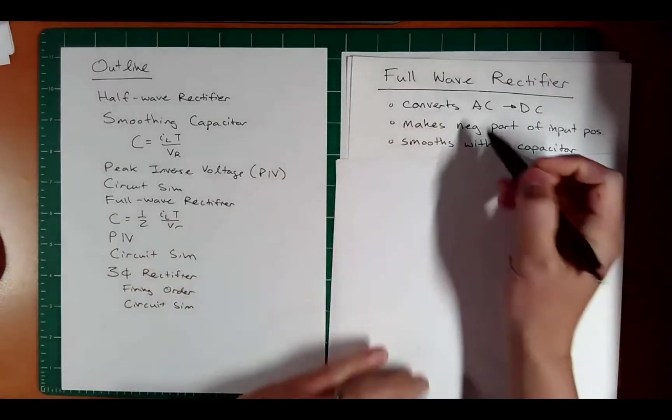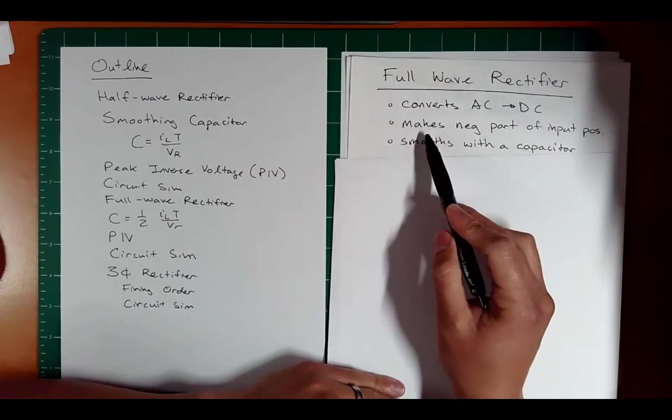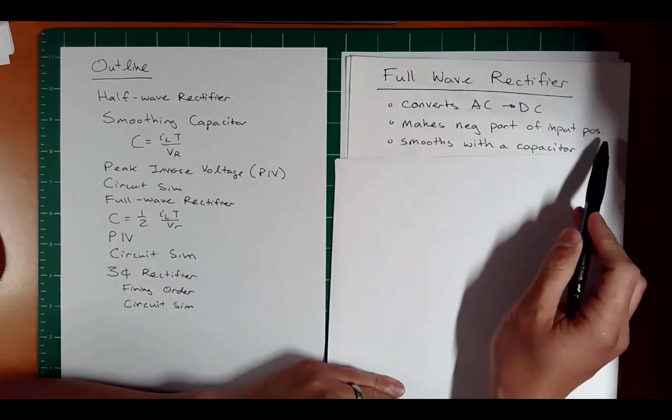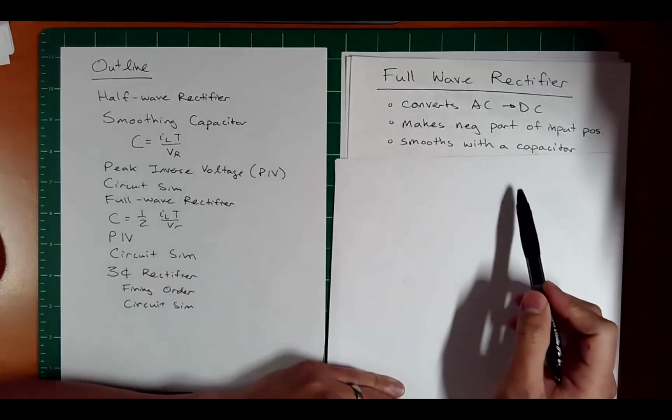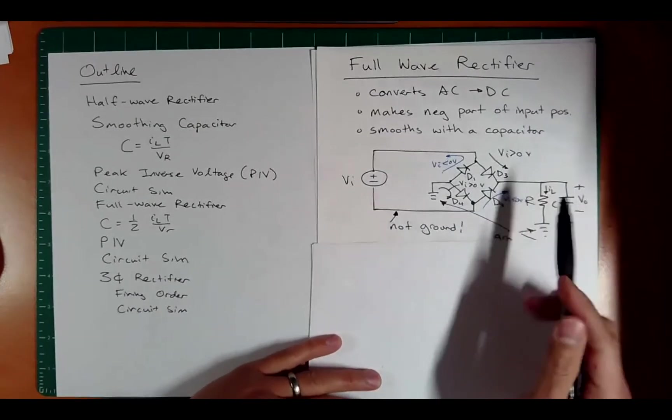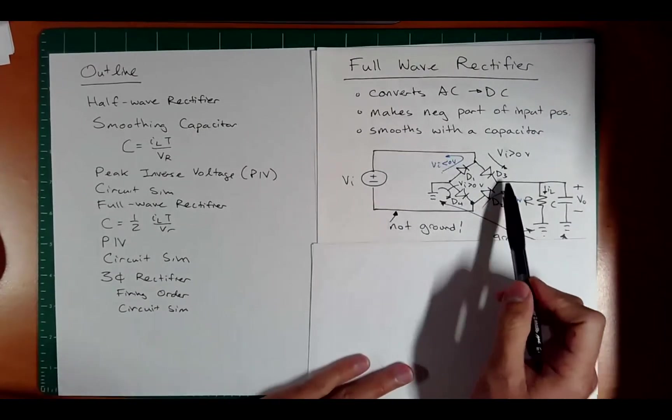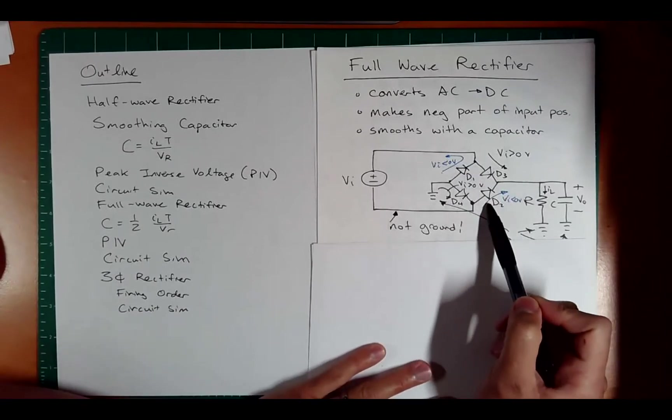So for a full-wave rectifier, again, converts AC to DC, but this time it actually makes the negative part of the input positive, where in the half-wave it actually made the negative part zero. And again, we will smooth it with the capacitor. So here's an image of a full-wave rectifier. Notice we have this kind of full bridge, four diodes, Wheatstone bridge kind of setup.